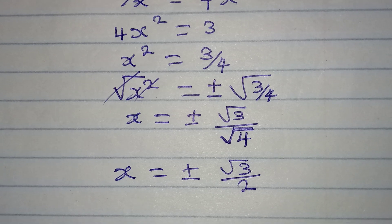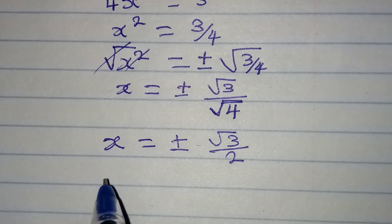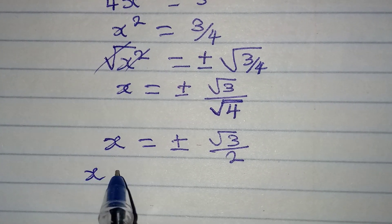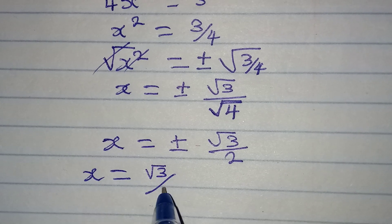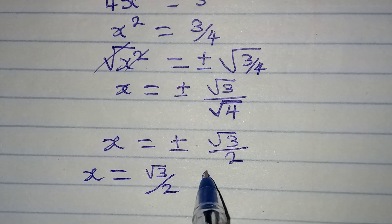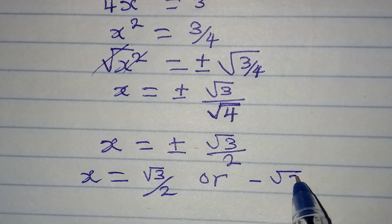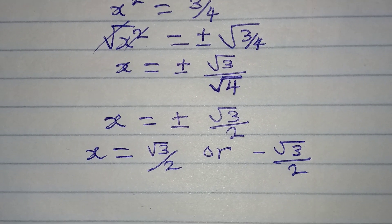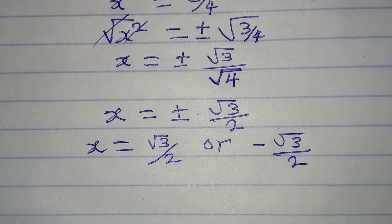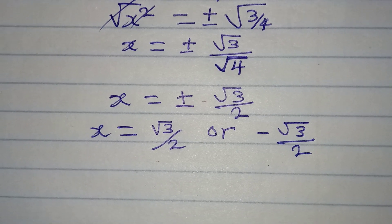Since the square root of 4 is 2, our two solutions are x equals positive root 3 over 2 or x equals negative root 3 over 2. Now let's verify that these values actually satisfy the original equation.